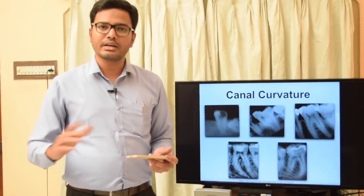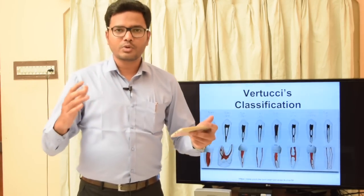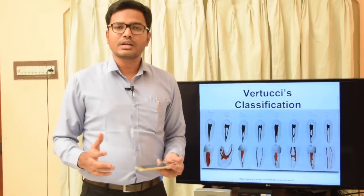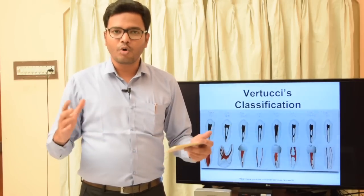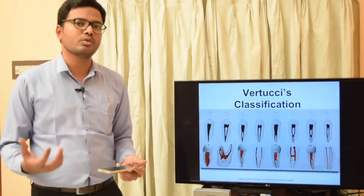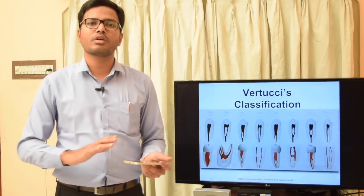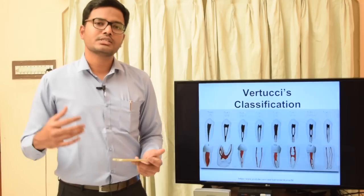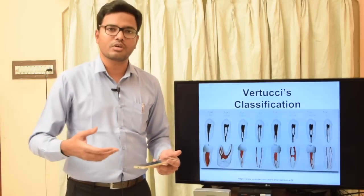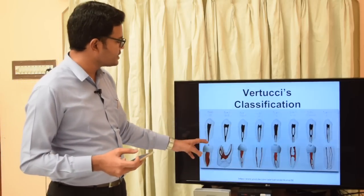Root canals are not plain conical structures. We have different canal configurations and ramifications. Various scientists have provided classifications of root canal configurations, starting with Vertucci's classification, then Weine's classification, and another by Jou et al. based on cross-sectional shape. In Vertucci's classification, the first three types end with a single canal at the apex, the next four types end with two canals, and the eighth type ends with three canals at the apex.